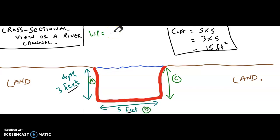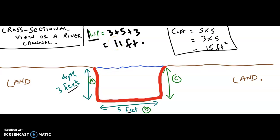Therefore, the wetted perimeter would be 3 plus 5 plus 3, which is equal to 11 feet. So the wetted perimeter is 11 feet.